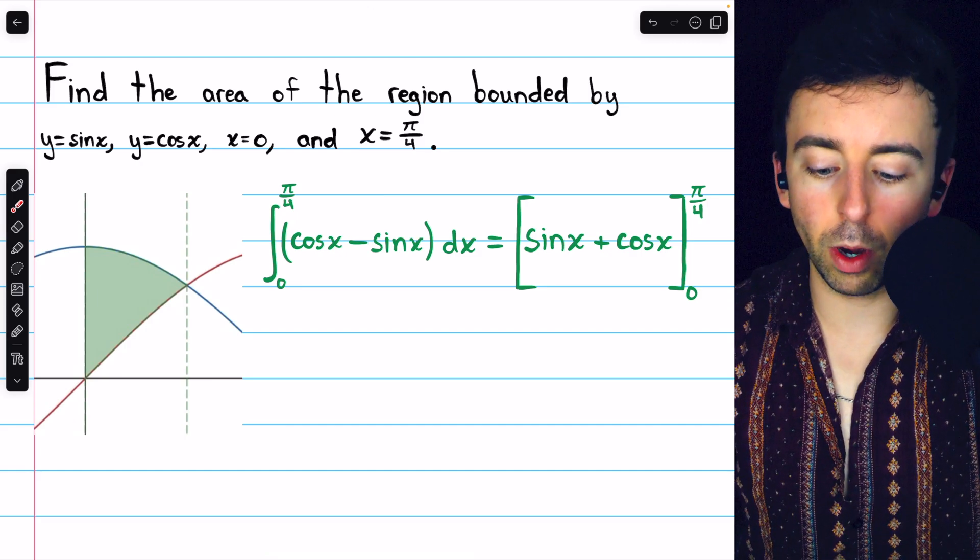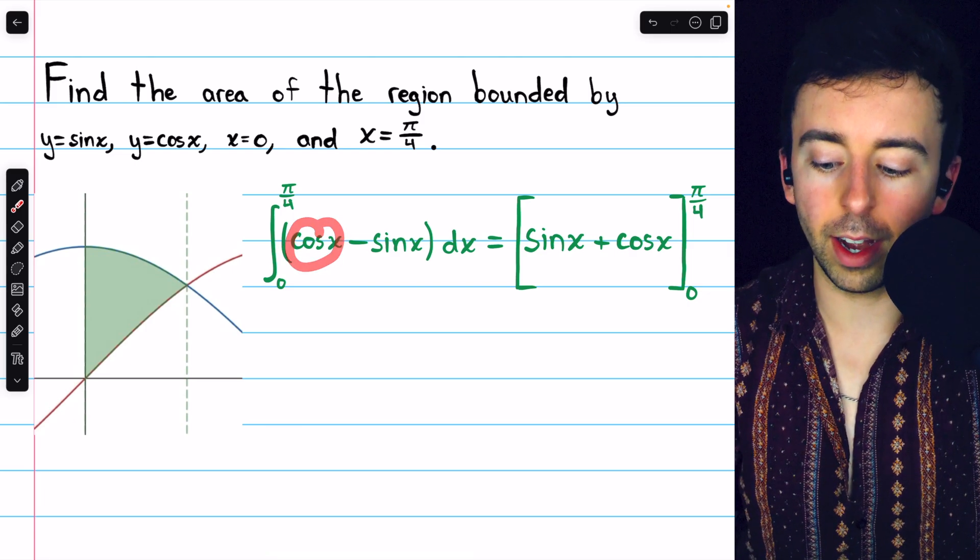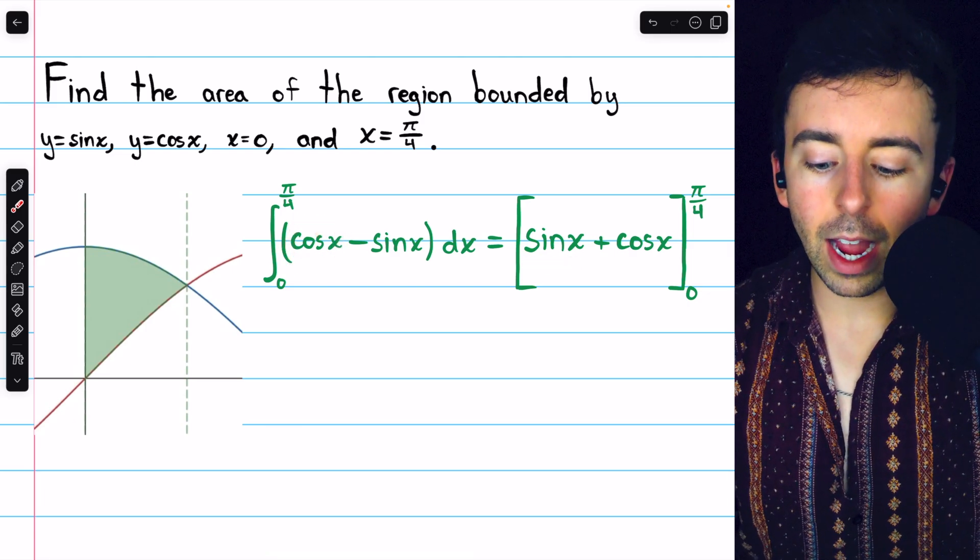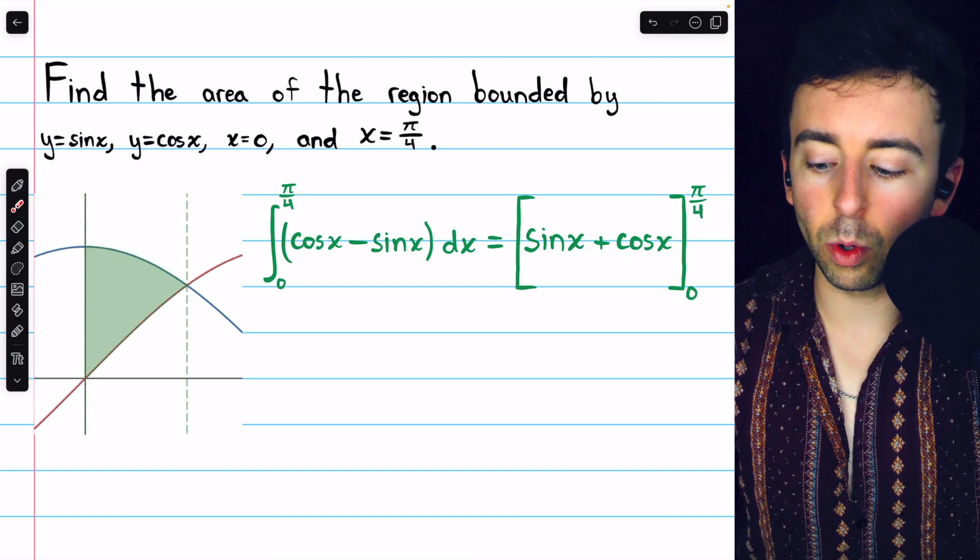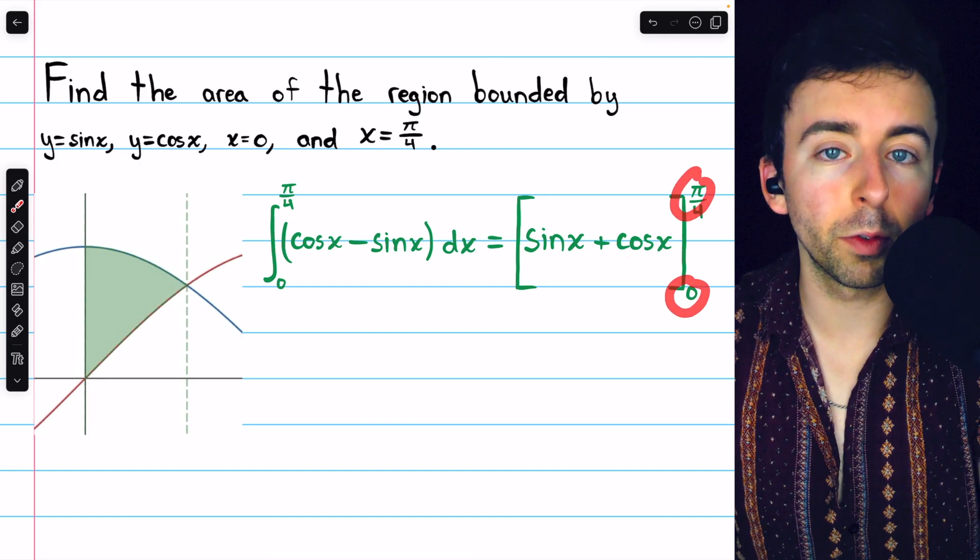Integrating these is pretty straightforward. The integral of cosine x is sine x, and the integral of negative sine x is positive cosine x. Then we just have to evaluate this from zero to pi over four.